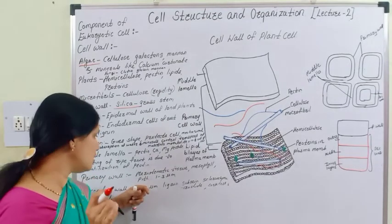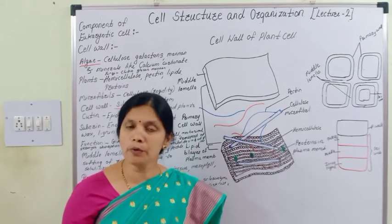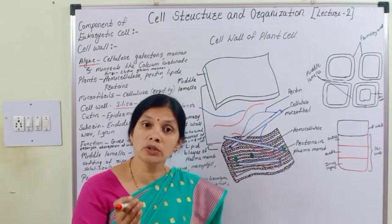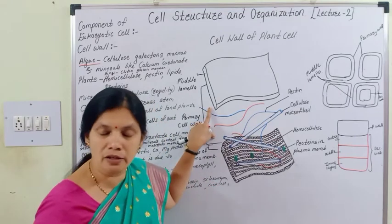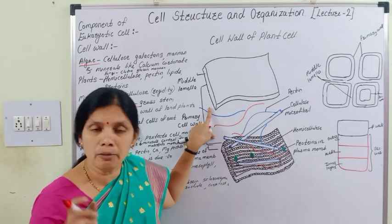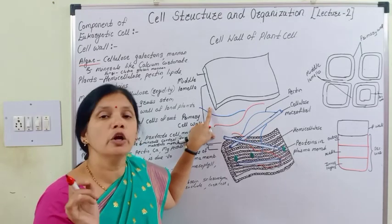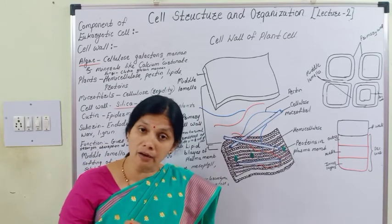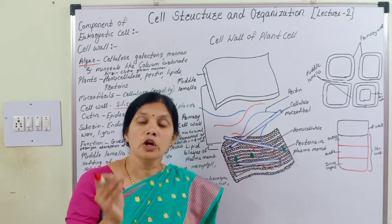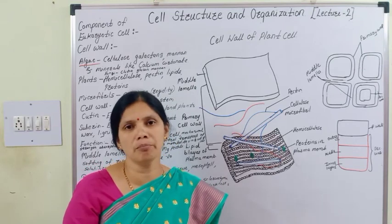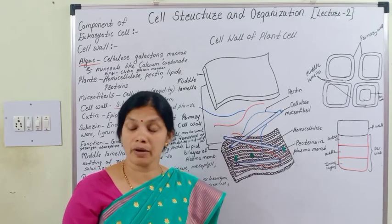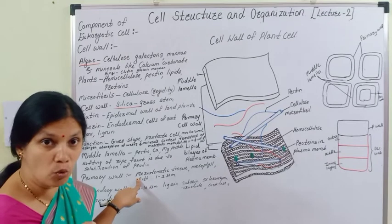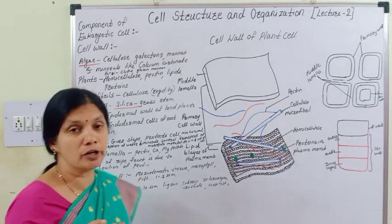The next layer is the primary wall. The primary cell wall is formed from cellulose, hemicellulose, and pectic components, and is 1 to 3 microns in thickness. This primary cell wall is formed during the early stages of growth and development of the plant, and is mostly observed in meristematic tissue.